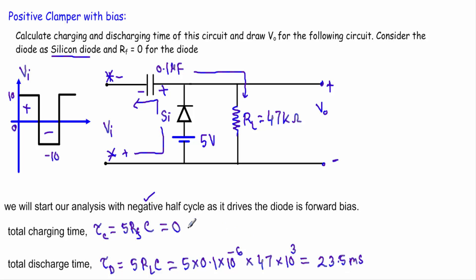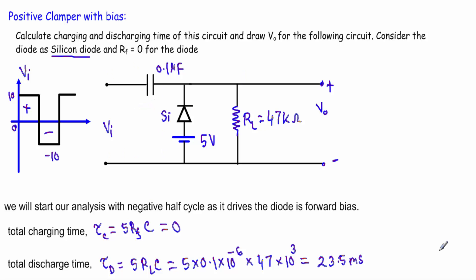The total discharging time τd = 5 × Rl × C = 5 × 47×10³ × 0.1×10⁻⁶ = 23.5 milliseconds. Since the charging time is much much smaller than the discharging time, the capacitor holds its voltage Vc during the half cycle when the diode is reverse biased. Therefore, this circuit acts as a clamper circuit.